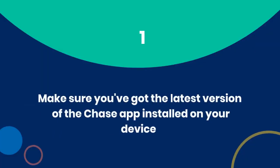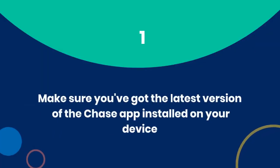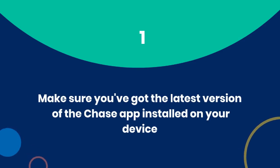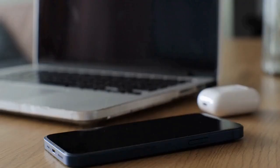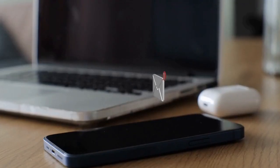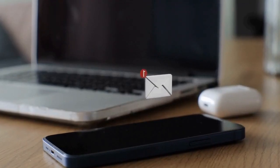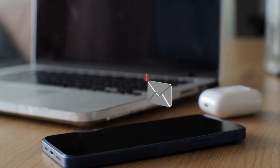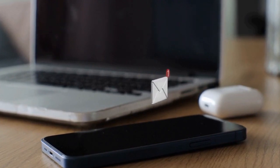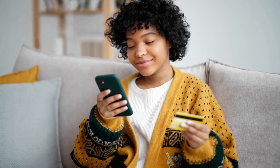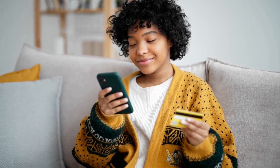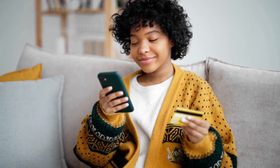Number one: How to add a business credit card to the Chase app. First things first, make sure you've got the latest version of the Chase app installed on your device. This ensures you have access to all the latest features and security updates. Once that's done, log into your Chase account through the app.